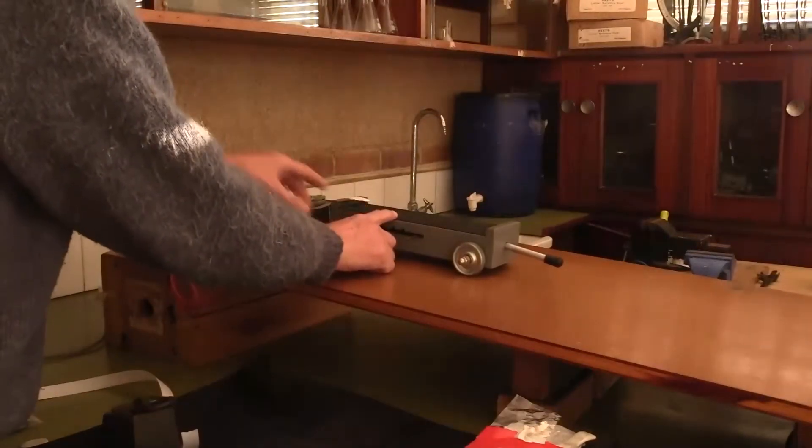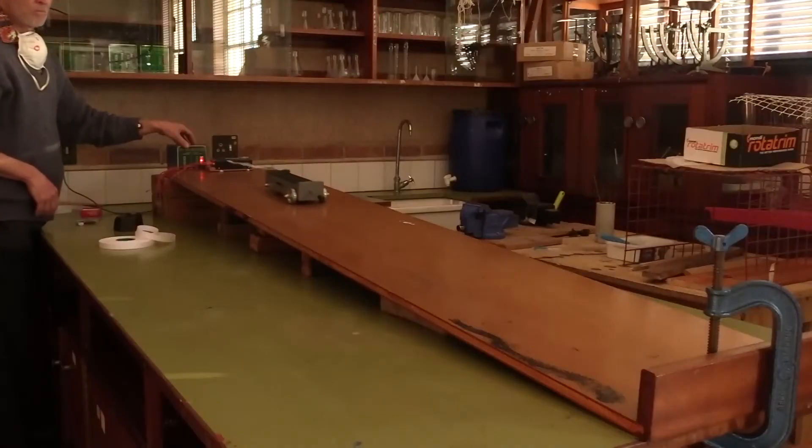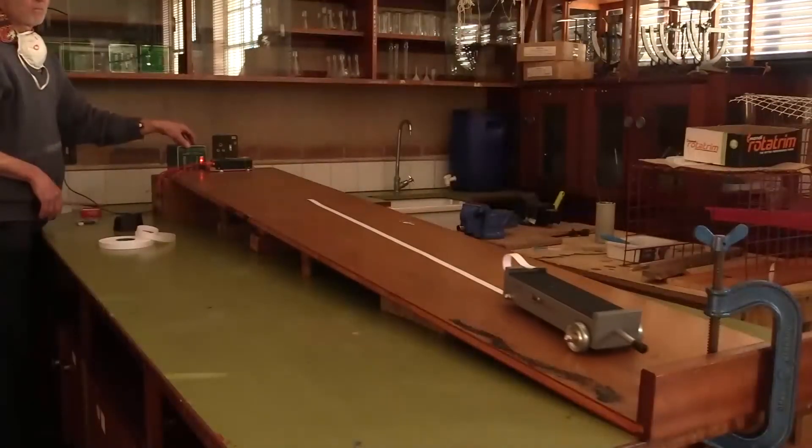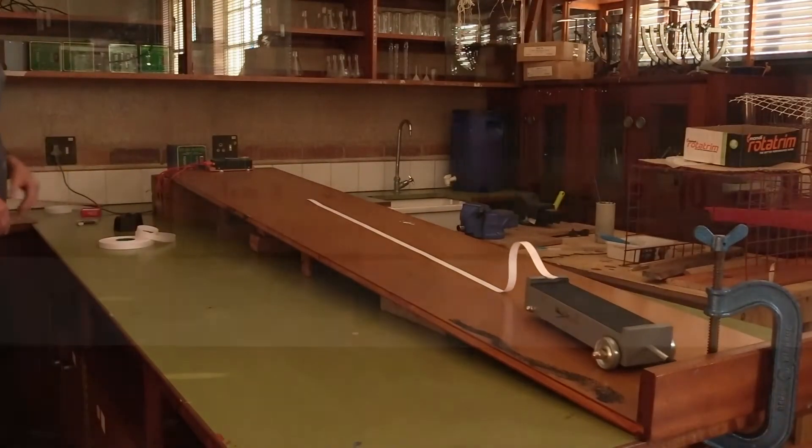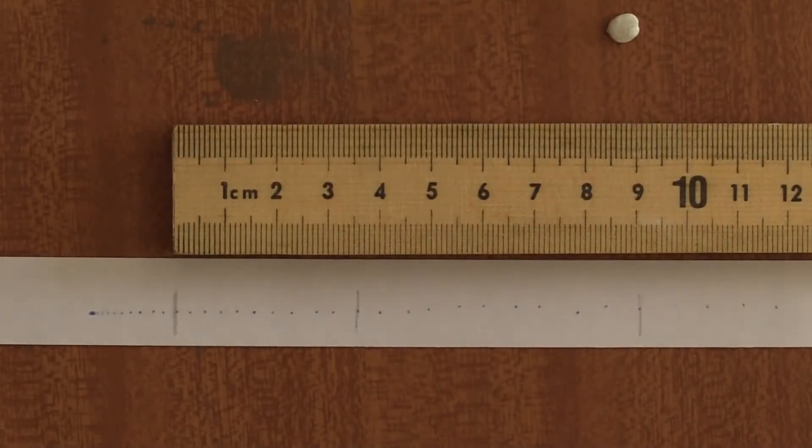We start the ticker timer and let the trolley accelerate down the slope. Notice how the distance between successive dots increases as the trolley accelerated.